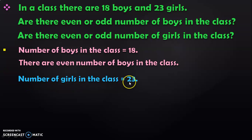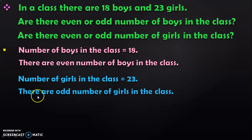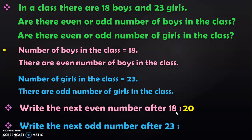Write down the next information: number of girls in the class is 23. Numbers with 1, 3, 5, 7, or 9 in the ones place are called odd numbers. So 23 is an odd number, and there are an odd number of girls in the class. We can add more questions: write the next even number after 18 — the answer is 20. Similarly, write the next odd number after 23 — the odd number after 23 is 25.